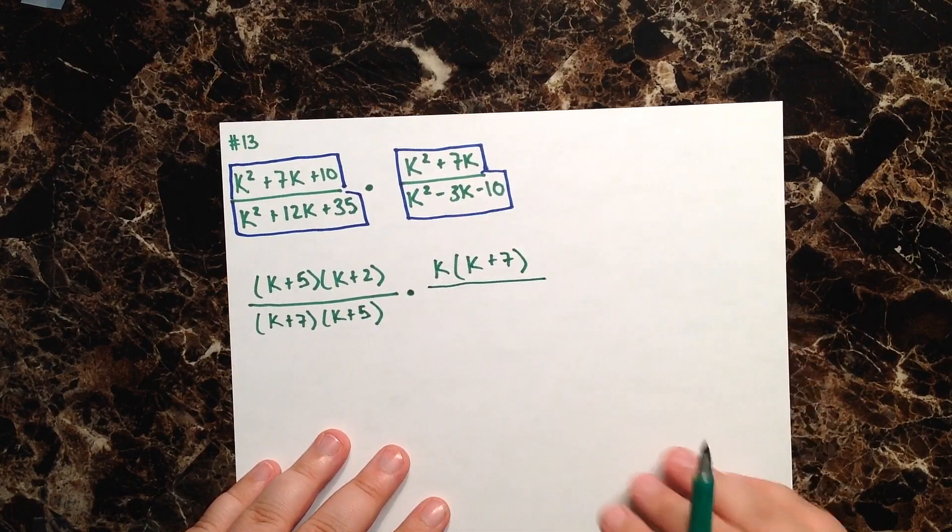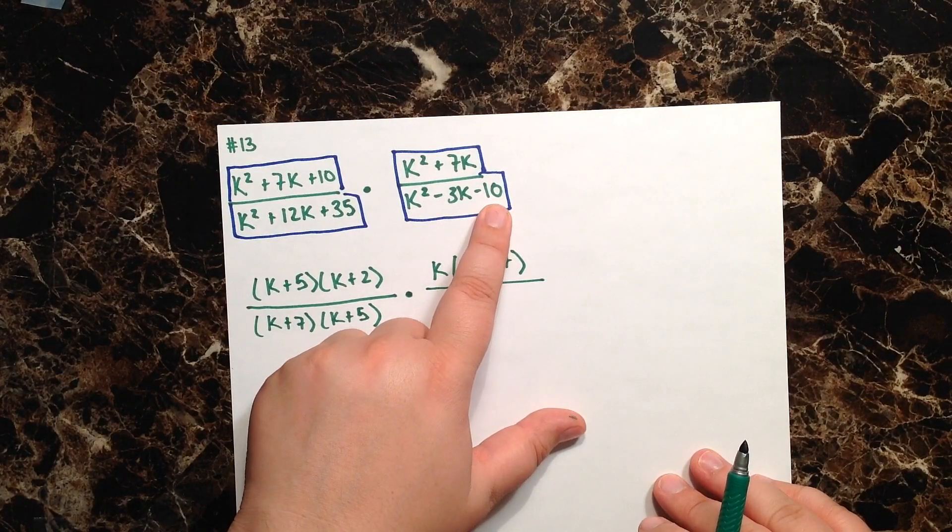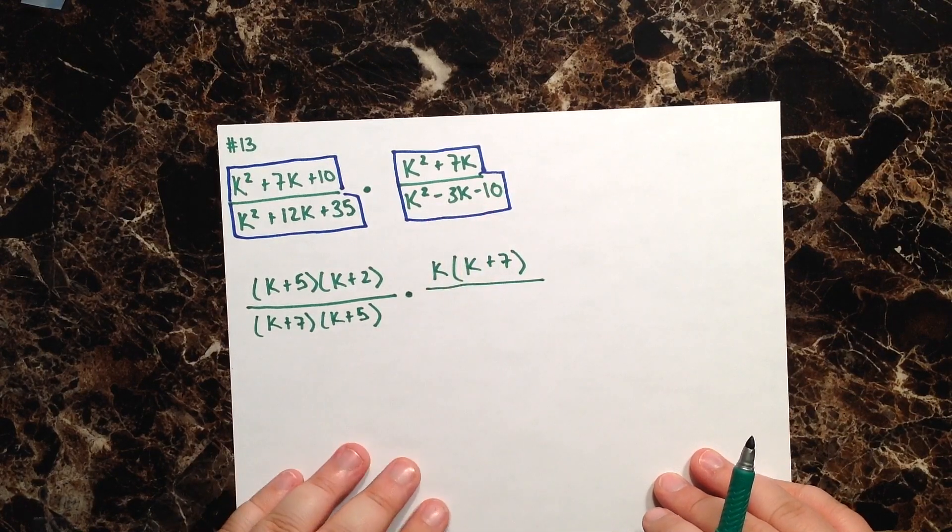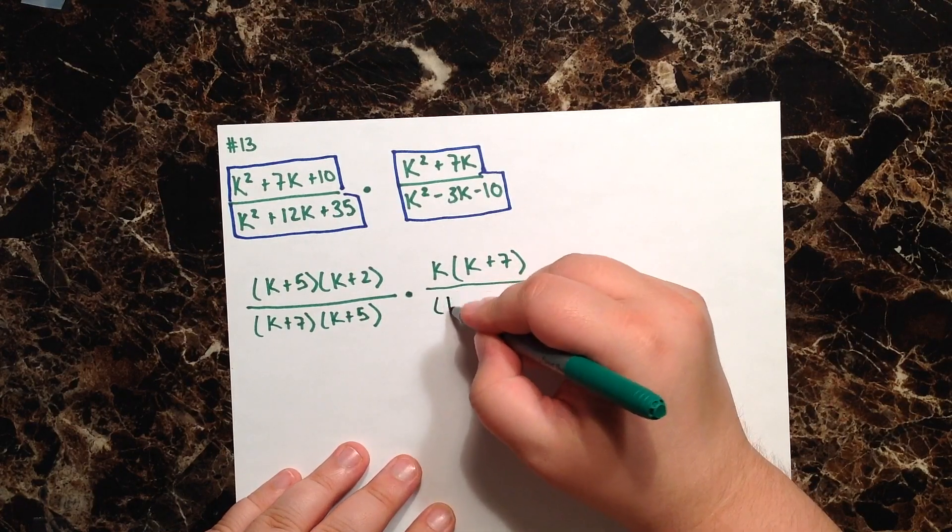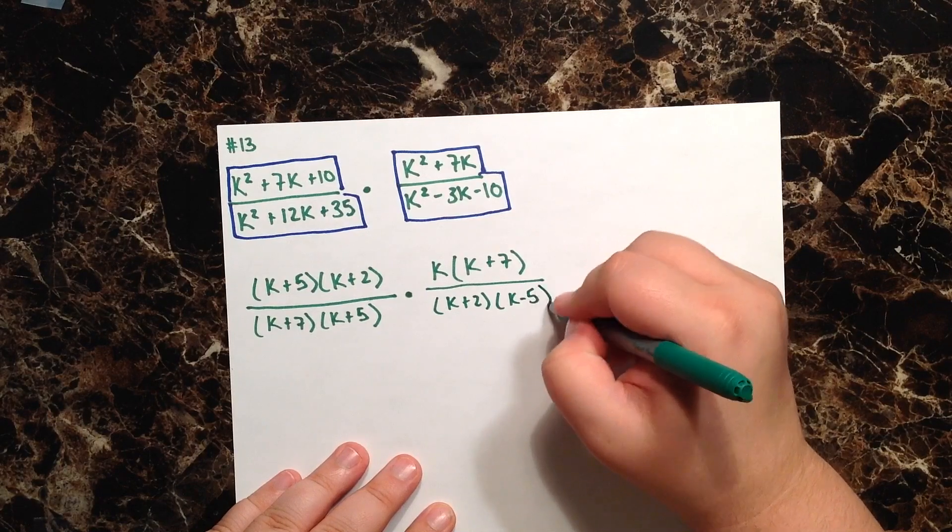And then in the denominator, I'm looking for factors of 10 that subtract to give me a negative 3. I think that's going to be k plus 2 and k minus 5.